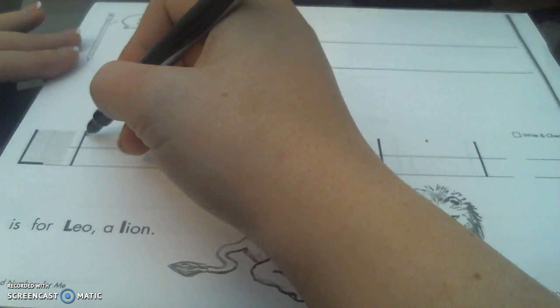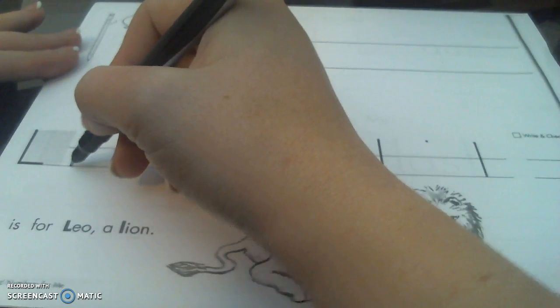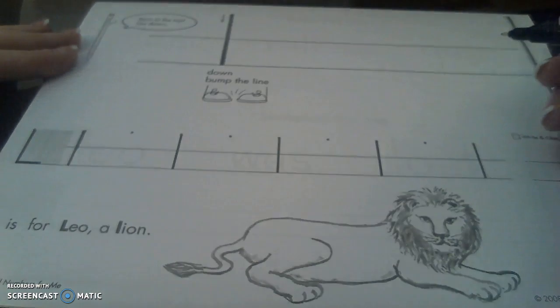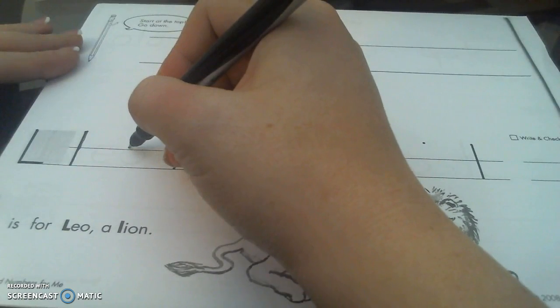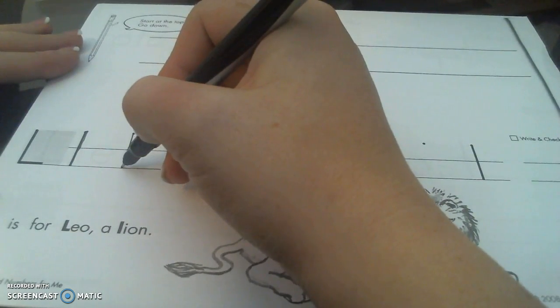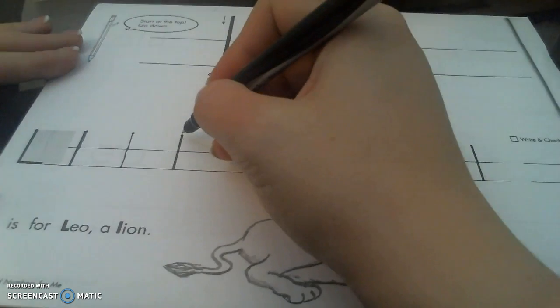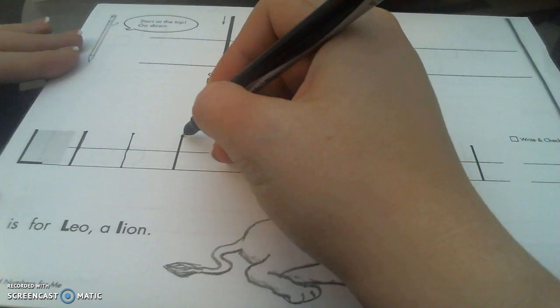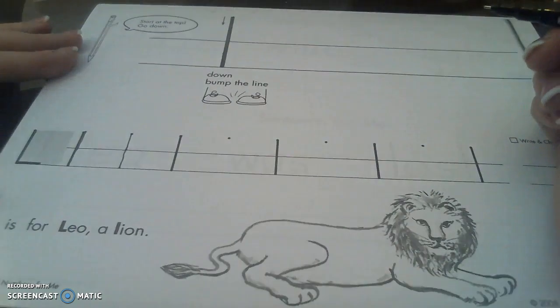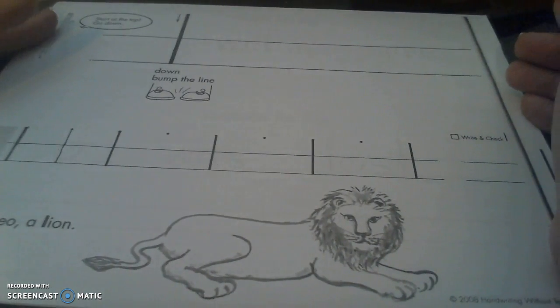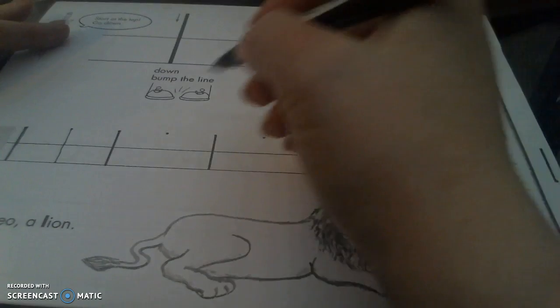We'll start at the top at our starting point, bump into the top line, and bump into the bottom line. Let's practice one together - starting point, bump into our top line, bump into our bottom line. Let's trace one more time together, and that's it. Now I'd like you to finish your page while I finish mine.